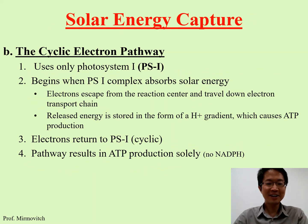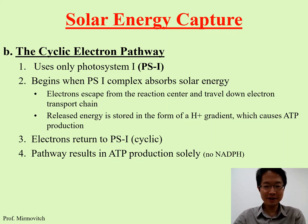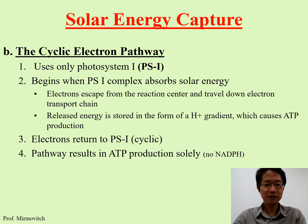We have finished the non-cyclic pathway. The non-cyclic pathway is the most important because it is what photosynthesis is mainly about. The cyclic electron pathway is minor. The cyclic electron pathway uses only photosystem 1.